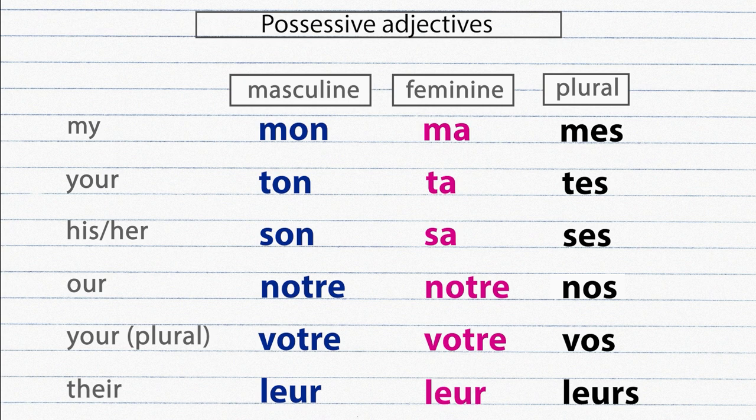Possessive adjectives are still adjectives and they should agree with the noun they describe or modify in gender and in number.